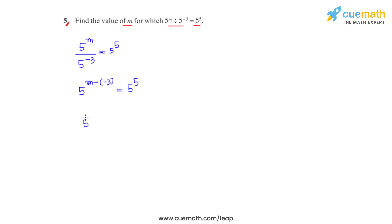Negative of negative becomes positive, so we get the power on LHS as 5 raised to m plus 3 to be equal to 5 raised to 5.